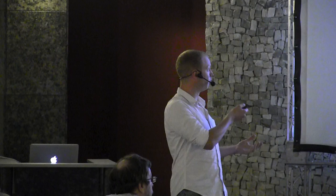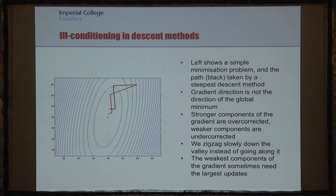The strongest components of the gradient — the model update directions which most quickly affect the functional — tend to be overcorrected, and those which affect the functional more gradually are undercorrected. In general, we actually might want that to be the other way around: we want to make a bigger update in this direction than in this direction, but the gradient tells us to do the opposite.